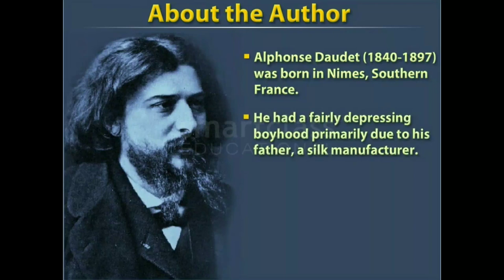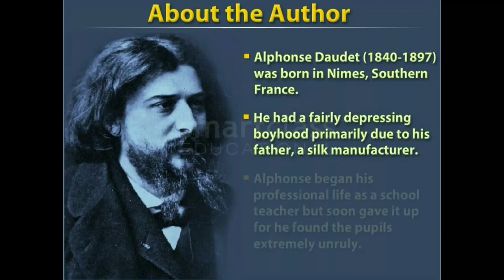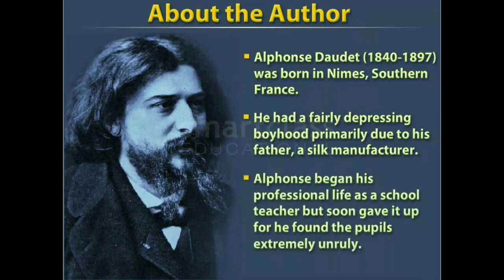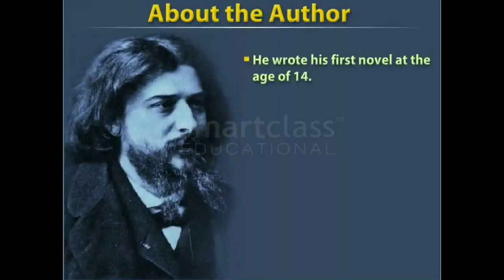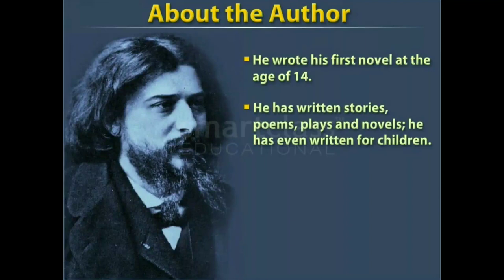About the author: Alphonse Daudet (1840–1897) was born in Nîmes, southern France. He had a fairly depressing boyhood, primarily due to his father, a silk manufacturer. Alphonse began his professional life as a school teacher but soon gave it up, for he found the pupils extremely unruly. He wrote his first novel at the age of 14.